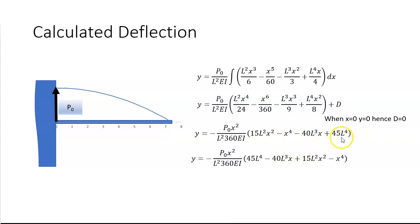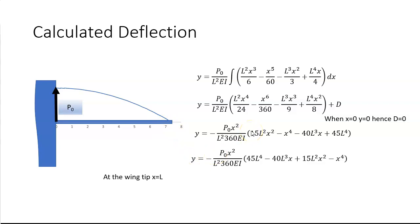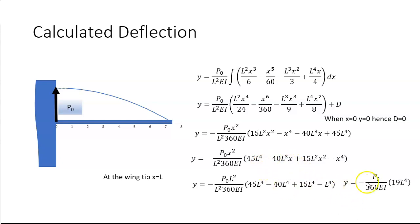Rearranging and factoring out 1/360 and x², we group terms by powers of l and x. The final deflection equation covers terms from l⁴ down to l⁰ and x⁰ up to x⁴. For maximum tip deflection, substituting x equals l gives deflection equal to p₀ over 360EI times 19l⁴. That is the deflection of a cantilever beam under a parabolic load.